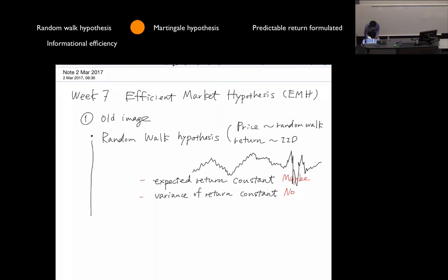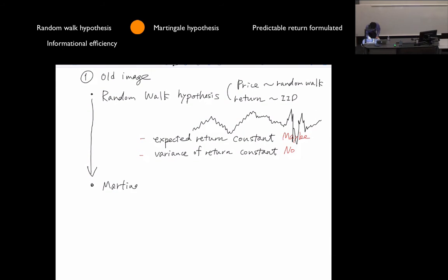So in the 1960s, Paul Samuelson modified this idea. And that was Martingale hypothesis. People say random walk, but people don't really mean IID return. What they mean is return is so unpredictable. They only talk about expectation. So the price is martingale. Price is a martingale process.